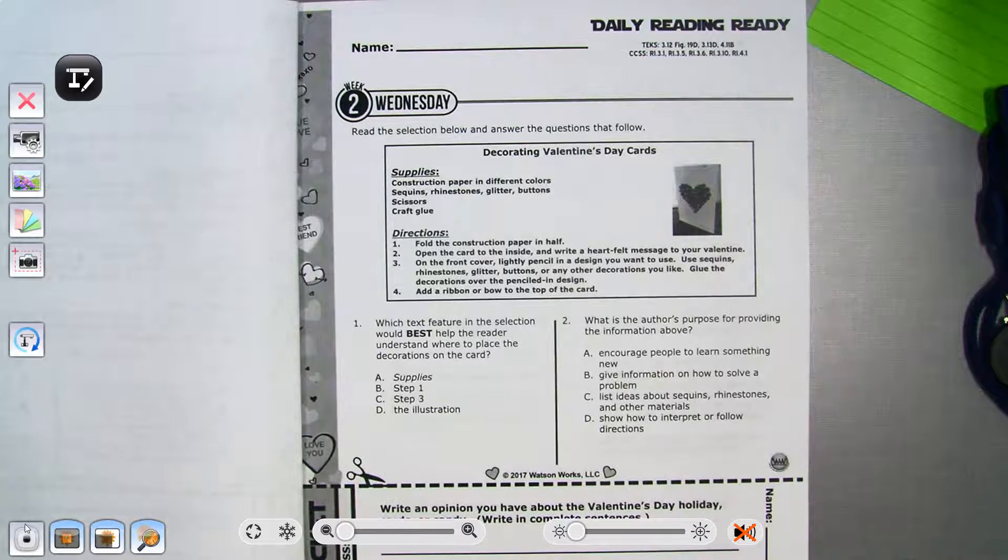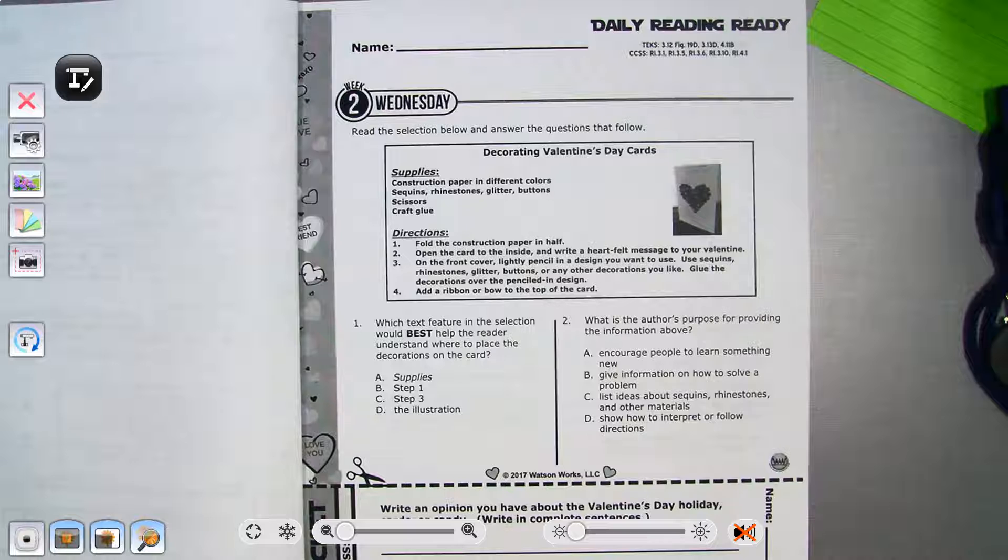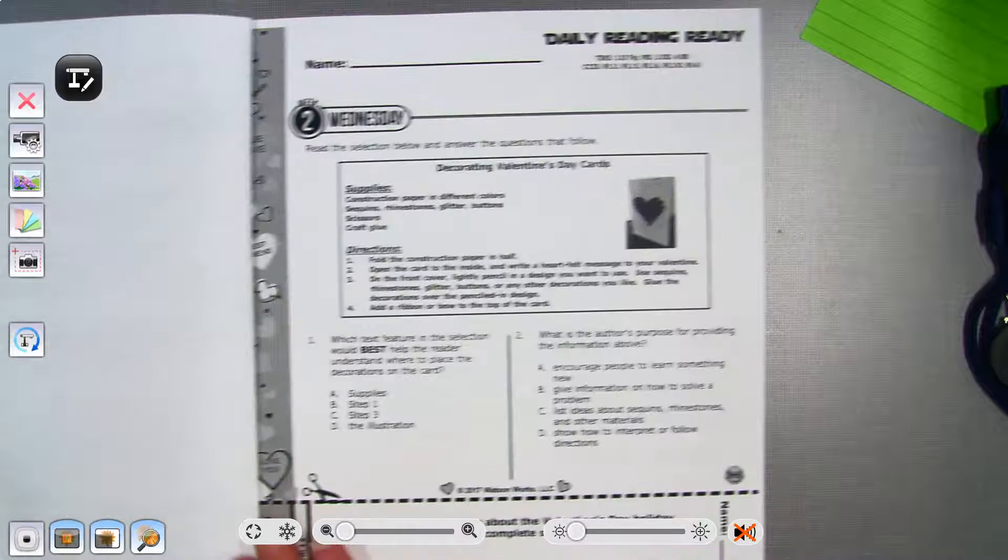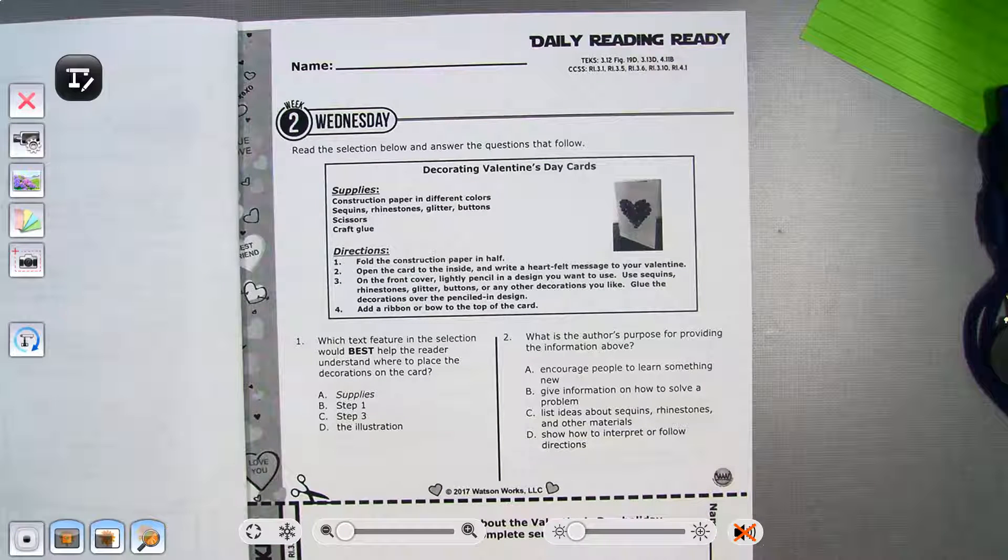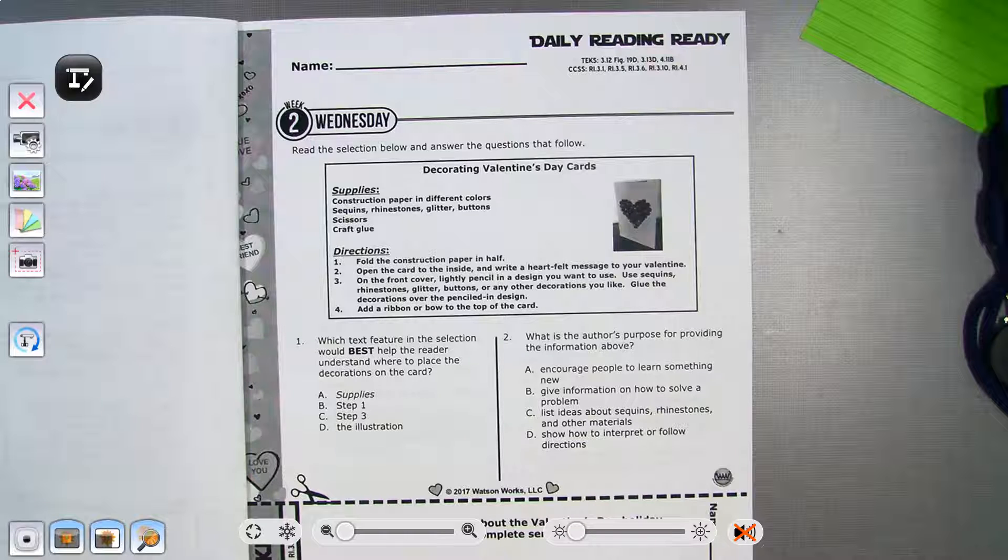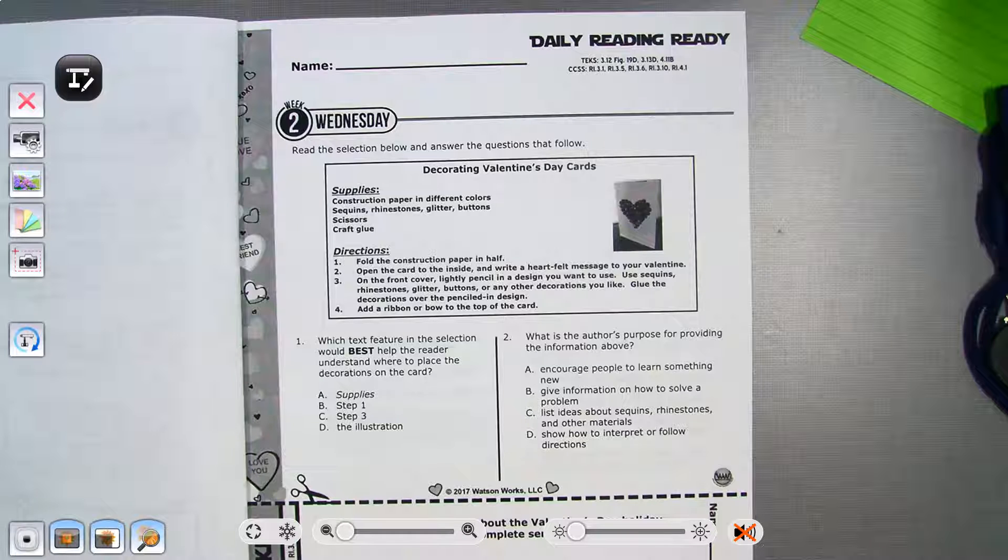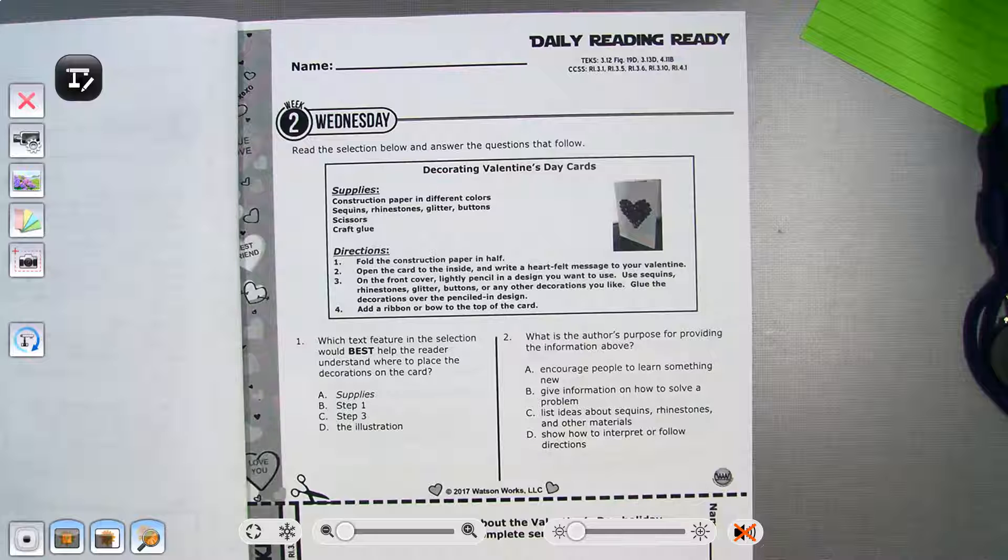For Wednesday, we are talking about decorating Valentine's Day cards. So this is what we call a procedural text. Procedural means it's telling us something in order, telling us steps on how to make something. So we're going to read it and then answer some questions.